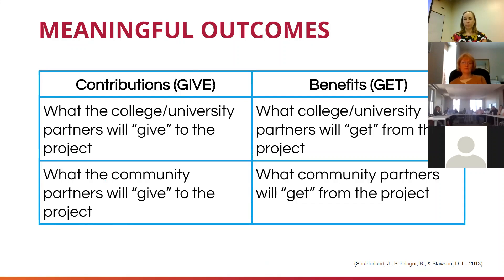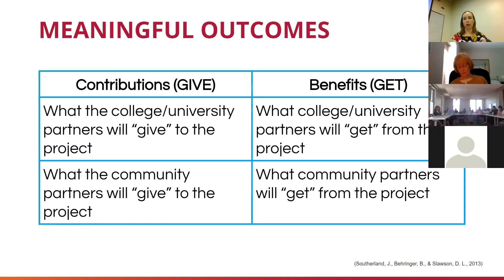For example, a community partner may be willing to come to your class a few times, talk about their organization, and help lead reflections. They may be more likely to do that if their organization is getting a pretty substantial benefit, and less likely if their organization is only getting a couple of volunteer hours. Making sure you're really talking about whether those things seem like a good fit and there's a good balance, whatever that looks like to those involved.